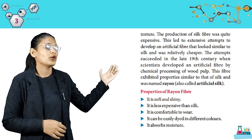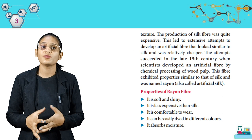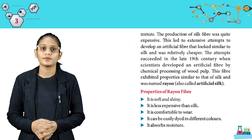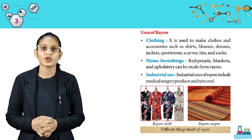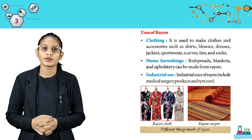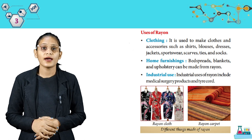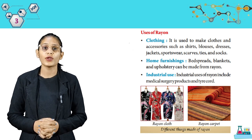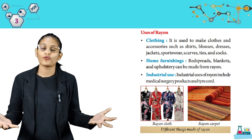Properties of rayon fiber: it is soft and shiny, less expensive than silk, comfortable to wear, can be easily dyed in different colors, and absorbs moisture. Uses of rayon — it is used to make clothes and accessories such as shirts, blouses, dresses, jackets, sportswear, scarves, ties and socks. Home furnishings like bedsheets and blankets can also be made from rayon. Industrial uses of rayon include medical surgical products and tire cord.